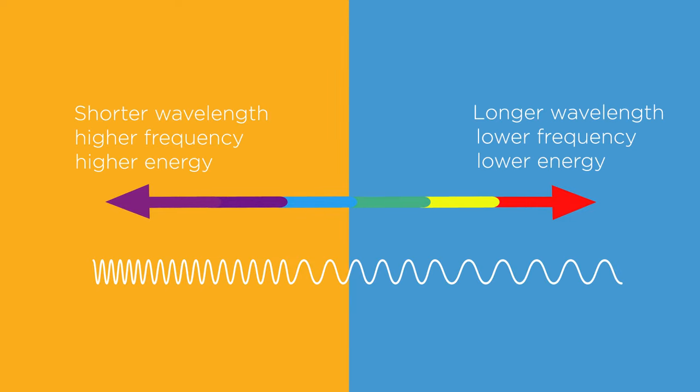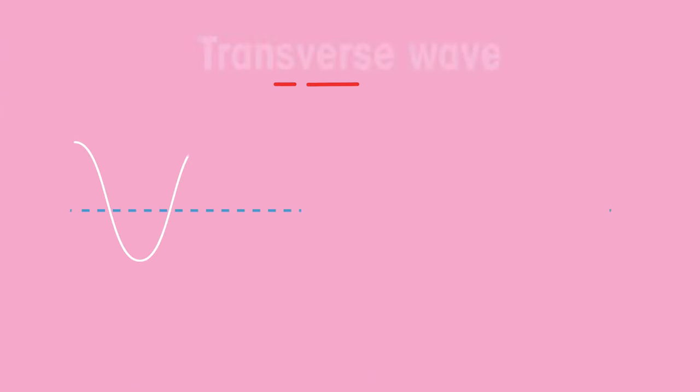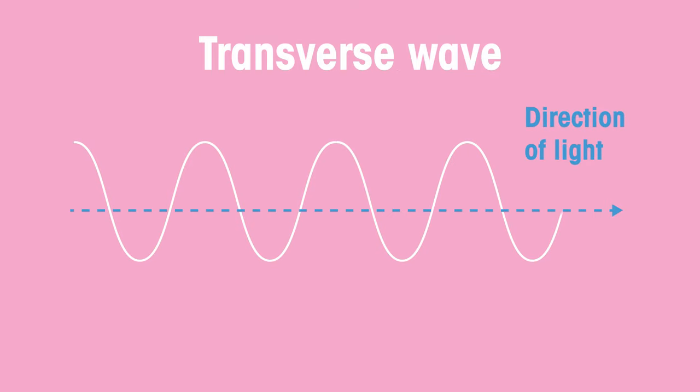Visible light is part of the electromagnetic spectrum. Light is a transverse wave and travels in straight lines.